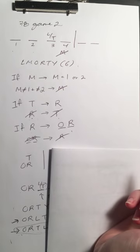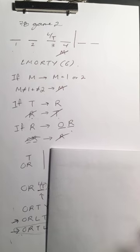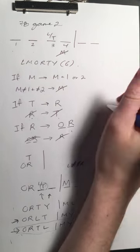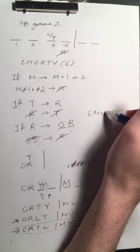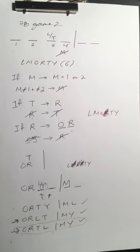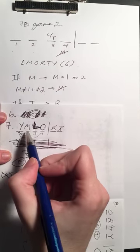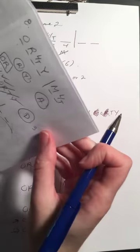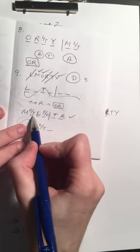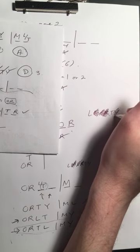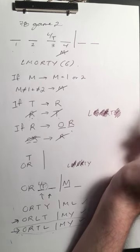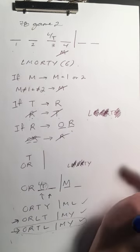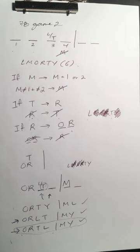Last question, number eleven: which one of the following students cannot be assigned to 1922? Let's start by going through our bank of acceptable solutions. R can be assigned to 22, so we eliminate that. M can be assigned to 22 — eliminate that. O and Y could be assigned to 22 — eliminate those. That leaves L and T as candidates for the answer.